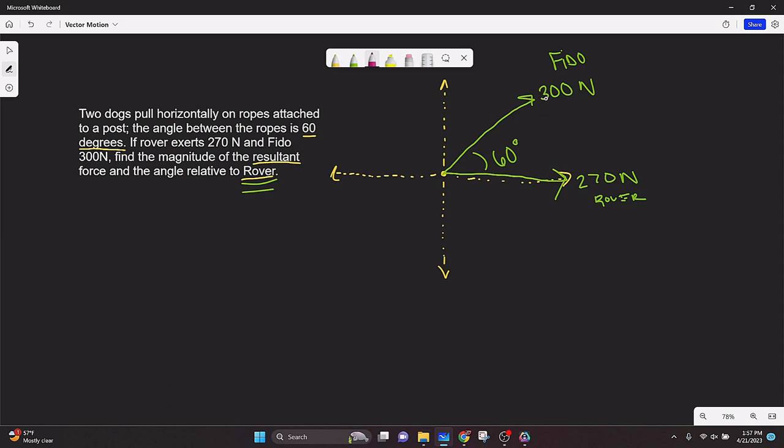So their x dimension and the y dimension values. So what is the x and y value? So what's the point right here for Fido? Well, we could do the x component, which will be cosine. Let's use a different color. Let's do blue.